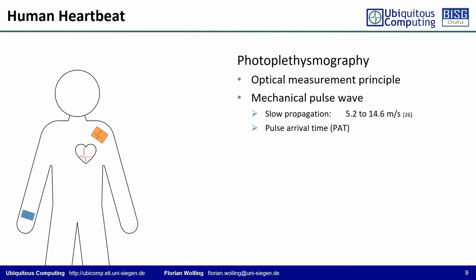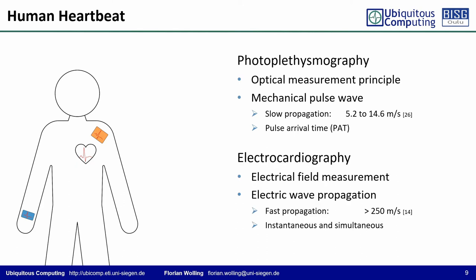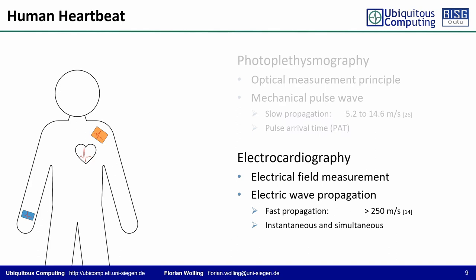Photoplethysmography (PPG) is a standard in today's wearables as it is cheap and relatively easy to implement. PPG is an optical measurement principle that captures the blood volume flow in the skin and hence the pulse wave traveling through the blood vessels. Because the mechanical pulse wave is relatively slow, PPG suffers from strong location dependency and a varying pulse arrival time. In contrast, ECG has been present in clinical contexts for decades and is successively developing towards use in wearable devices. The typical pointed peak of the ECG's well-known QRS complex can serve as a significant landmark that is quasi-simultaneously detectable throughout the entire body surface. Because PPG has a much slower, non-negligible velocity, we decided to evaluate our approach on ECG signals first.